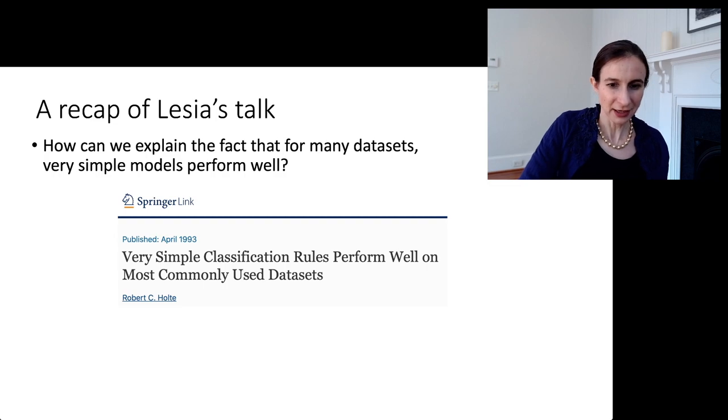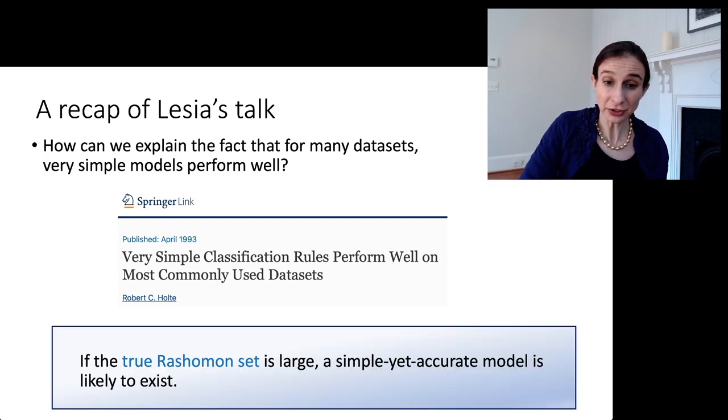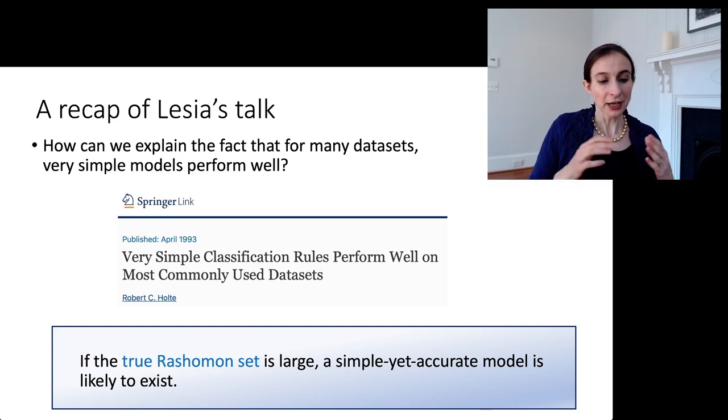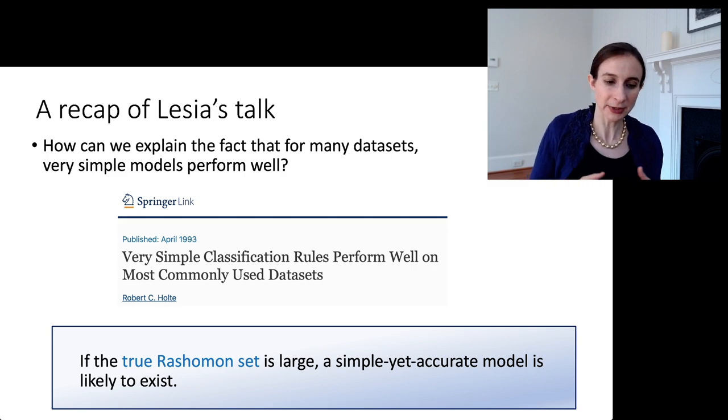And Lesia has a technical explanation, a really elegant technical explanation, which is that if the true Rashomon set is large, then a simple yet accurate model is likely to exist for that dataset.